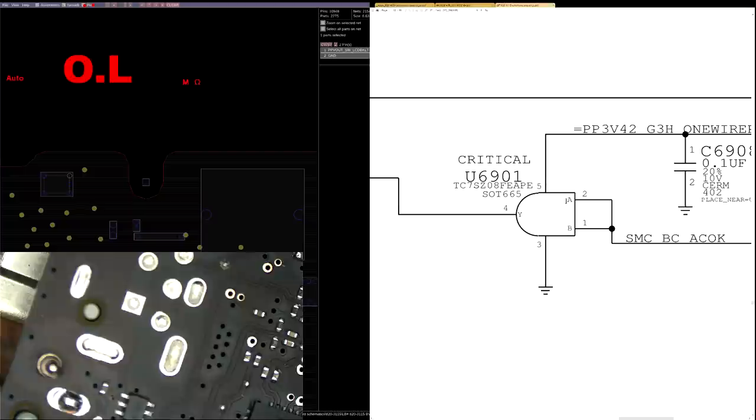If you look up the datasheet for this chip, you'll notice that the way this works, if A and B are present, you get Y. So I need SMCBCACOK to be present and PP3V42 to be present in order to get the output, which I probably don't have right now.